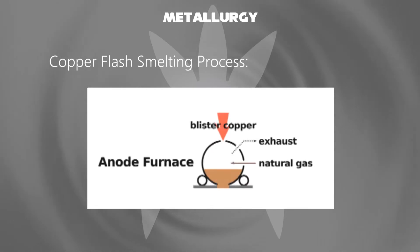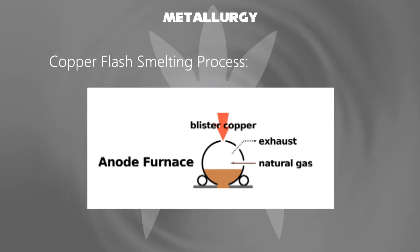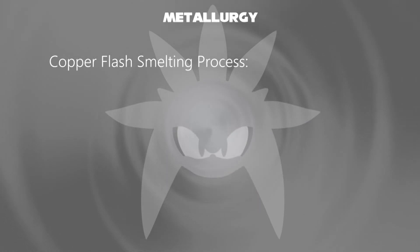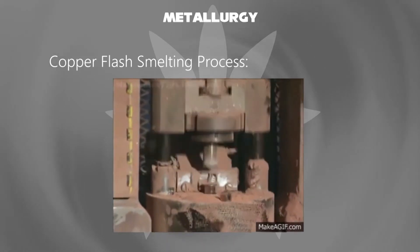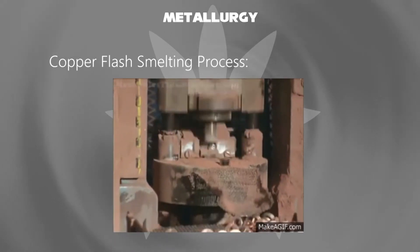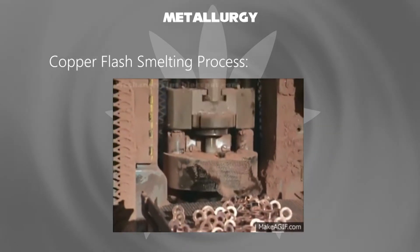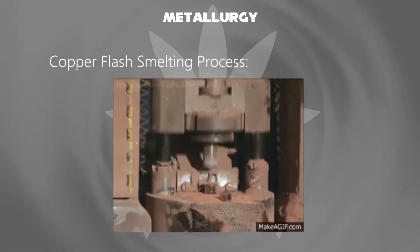Thirdly, in an anode furnace, 98% pure copper is formed by removing the sulfur. And in the final stage, a casting machine — these machines facilitate the process in which the metal is forced under high pressure into the mold cavity.